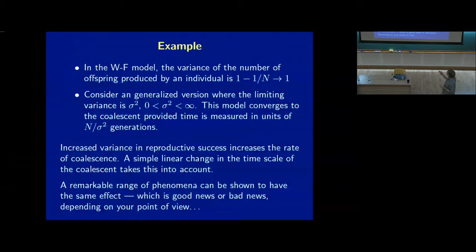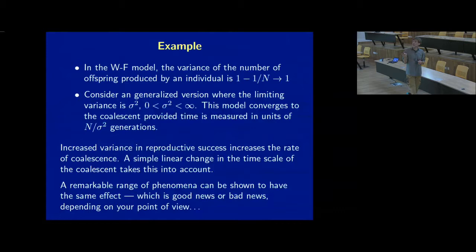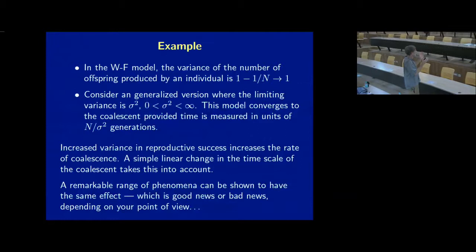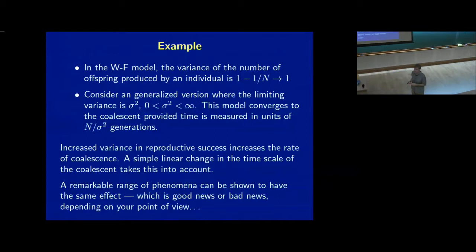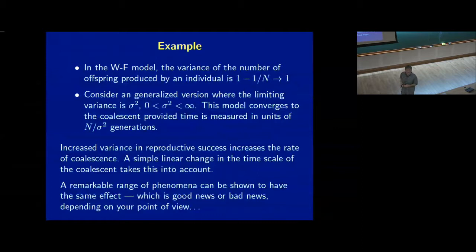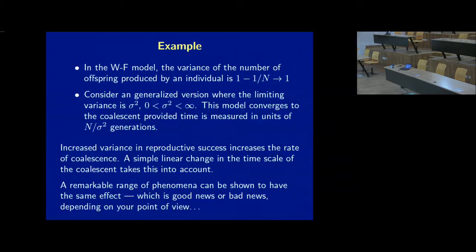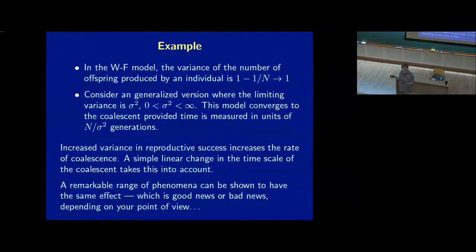As long as this variance is bounded, you can show that such a model converges to the coalescent provided you scale time appropriately to take into account the increased variance. The bigger the variance, the faster genetic drift, and the faster the coalescent time scale operates. If you think about my analogy of beetles running around in a box — the faster the beetles run, the more likely they are to run into each other. Someone asked about multiple coalescences — John Wakeley has worked on this a lot.